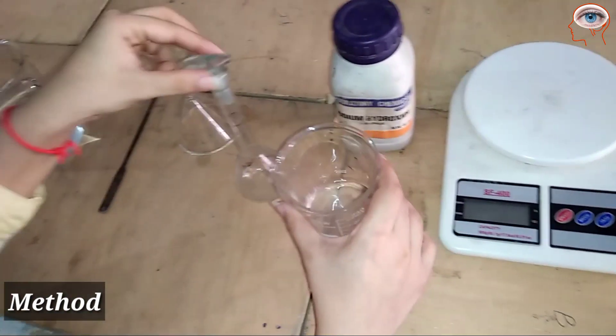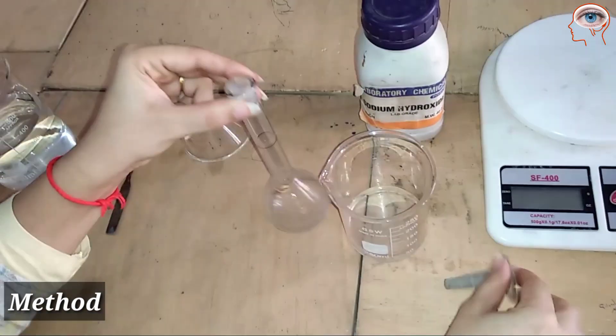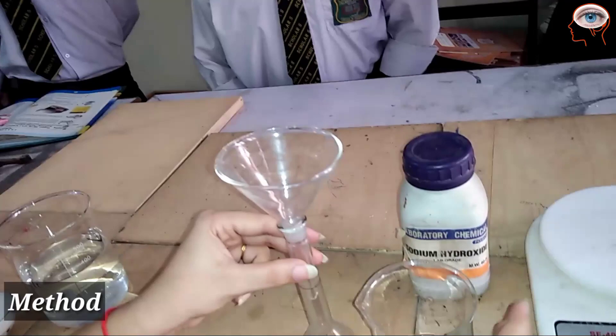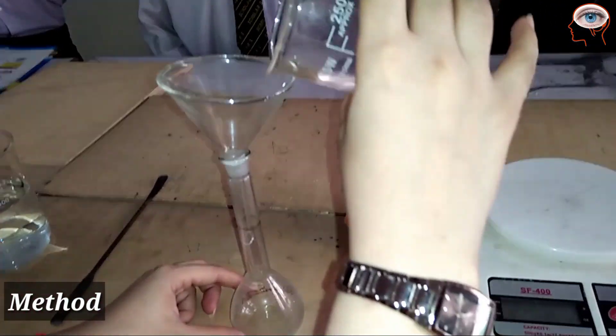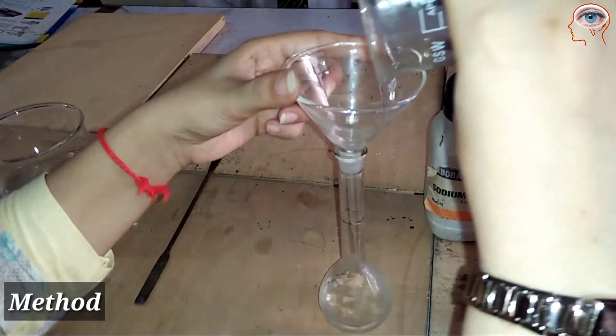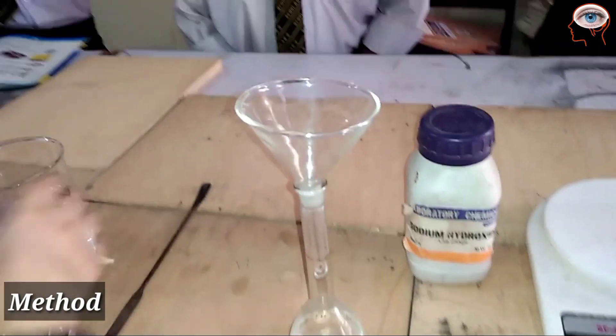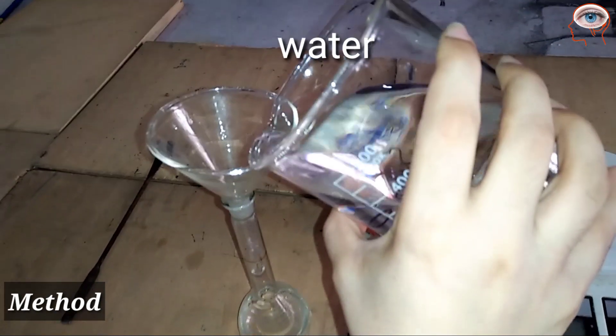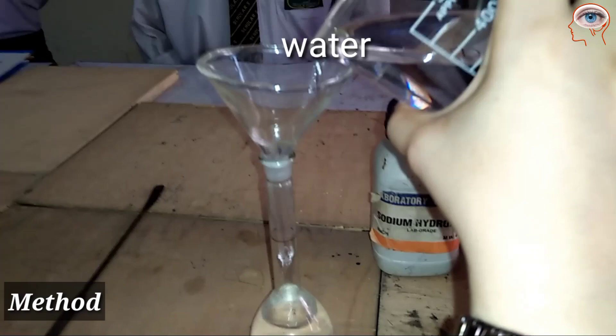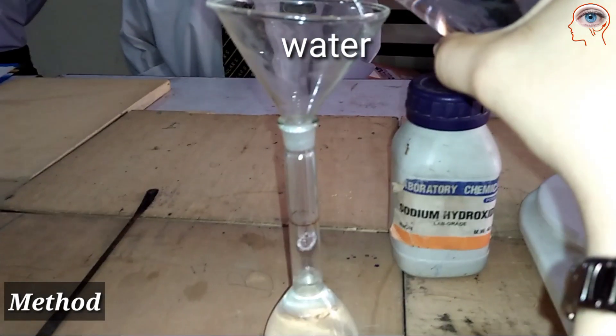When the solid is totally dissolved and nothing is left at the bottom, transfer the solution into the measuring flask using a funnel. Be careful when transferring, especially when you're very close to the neck of the flask, so add it slowly.